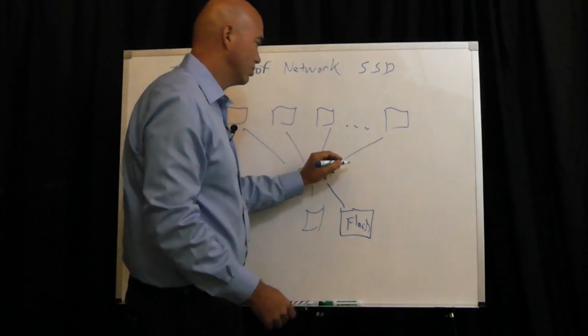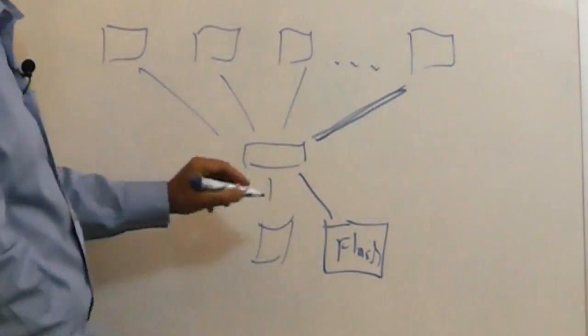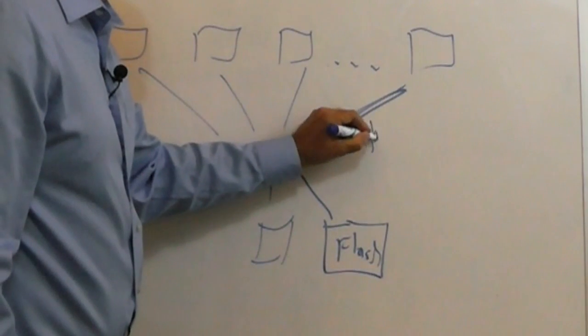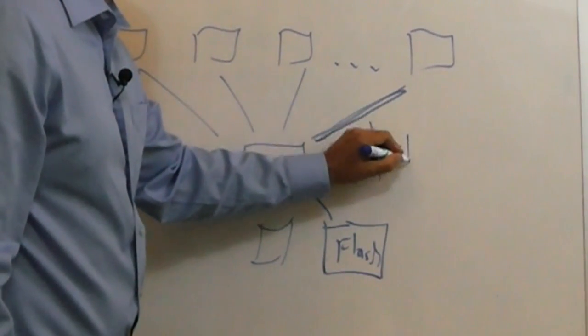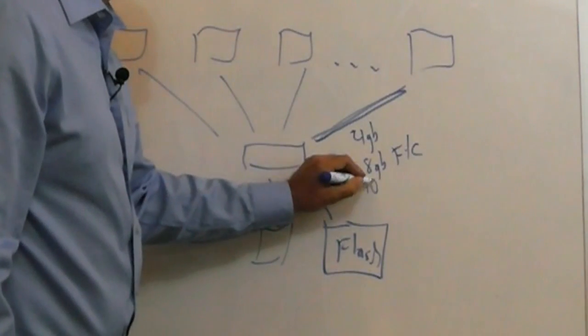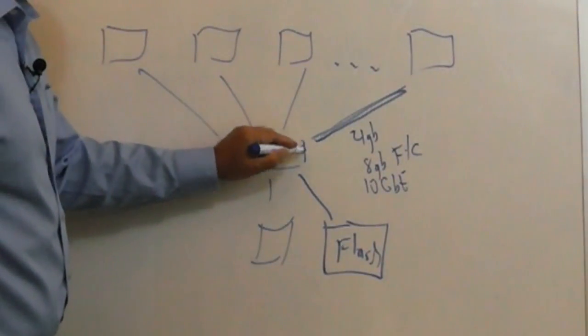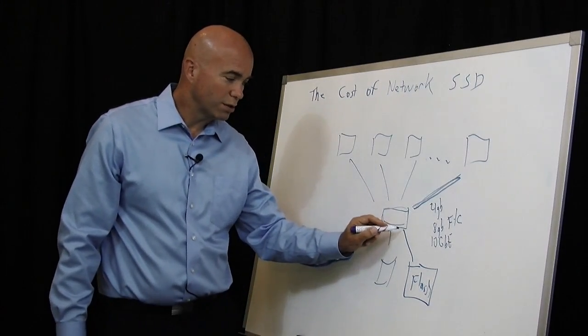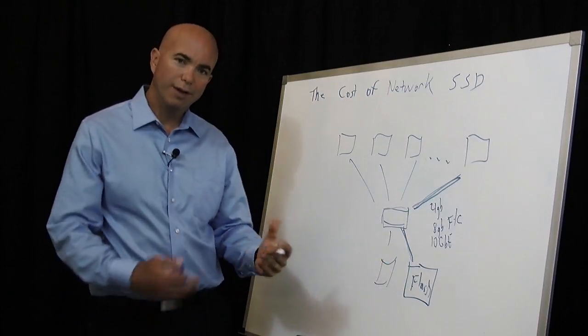Well, the first thing they do typically is upgrade this segment here. Well, if you upgrade that from, say, 4 gigabit to either 8 gigabit fiber or 10 gigabit ethernet, you also, of course, have to upgrade the switch. If you upgrade the switch, then you're probably going to upgrade the connection back to your flash device. So that costs money.